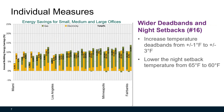Wider dead band and night setbacks is another advanced control strategy you can implement. Increasing the temperature dead band from one degree to three degrees and lowering the night setback temperature from 65 to 60 will save roughly 10 percent of natural gas or electricity.